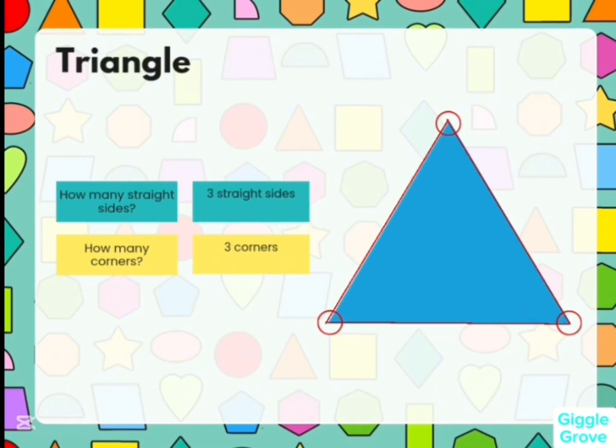Now let's see a triangle. How many straight sides? There are three straight sides. How many corners? There are three corners.